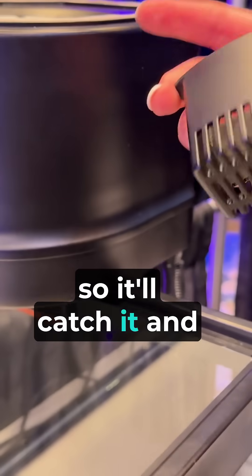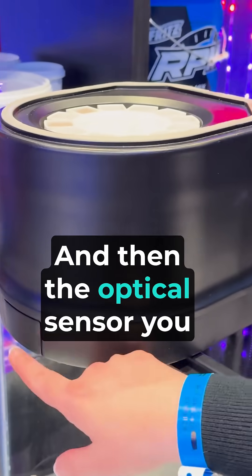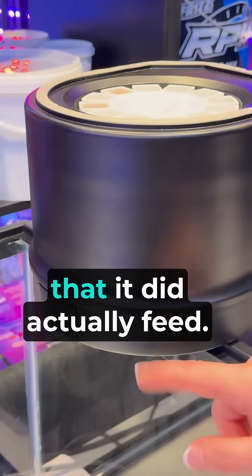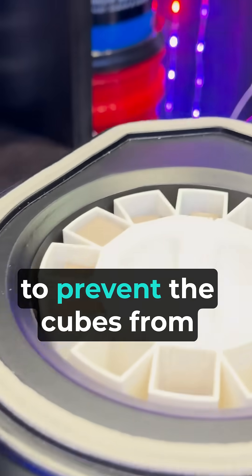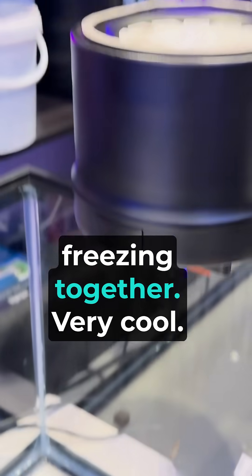So we do have our cartridge, so it'll catch it and thaw in here. And then the optical sensor you can see came out to make sure that it did actually feed. So there's an optical sensor to make sure it feeds, and they have a built-in plunger to prevent the cubes from freezing together. Very cool.